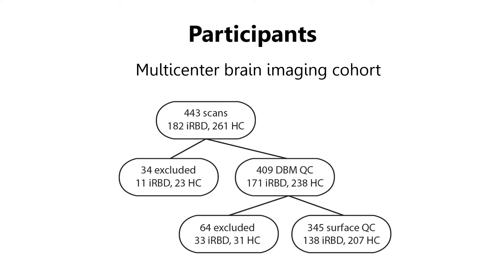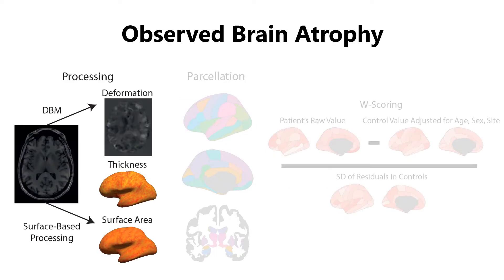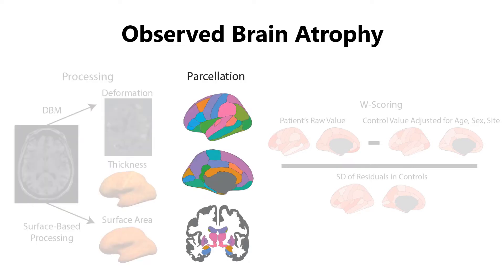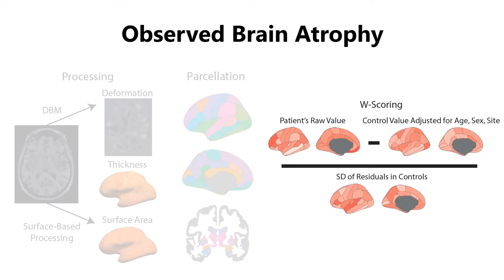To do this, we compiled existing brain MRI data from several international cohorts of patients with polysomnography-proven RBD and matched healthy controls, yielding a large cohort of 443 scans from 182 patients and 261 controls. We quantified the level of brain atrophy from the T1-weighted images and performed deformation-based morphometry and surface-based processing to generate individual tissue deformation, cortical thickness, and cortical surface area maps, which were then averaged and parcellated, and then W-scored to control for the effects of age, sex, and site seen in matched controls.